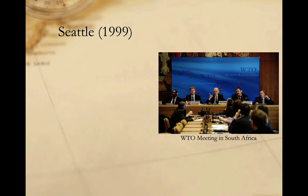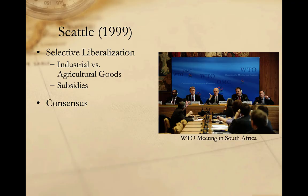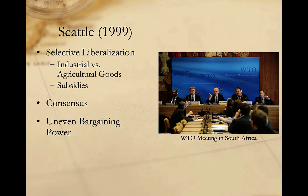Inside the WTO talks themselves, there were also interesting developments. The WTO, like the GATT before it, operated on the basis of consensus, meaning any single country could block agreement. In practice, however, the quadrilateral group — the United States, the European Union, Canada, and Japan — would meet ahead of formal negotiations to develop agreement among themselves, then present it to the rest. As a result, trade liberalization had tended to focus on manufactured goods where developed countries had an advantage, while permitting more protectionist measures including subsidies in areas like agriculture where developing countries had comparative advantage.